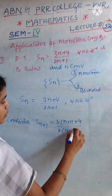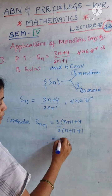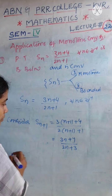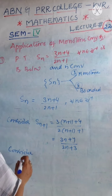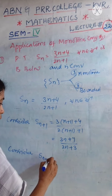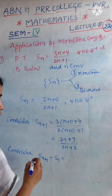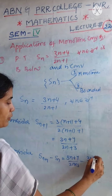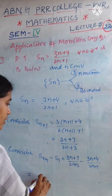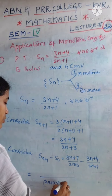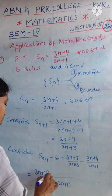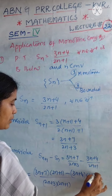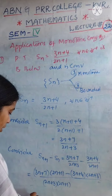Substituting n+1, the numerator becomes 3(n+1) + 4 = 3n + 7, and the denominator becomes 2(n+1) + 1 = 2n + 3. Now consider Sn+1 minus Sn, the difference of two consecutive terms: (3n+7)/(2n+3) minus (3n+4)/(2n+1). Taking the LCM of the denominators, we get denominator (2n+3)(2n+1).